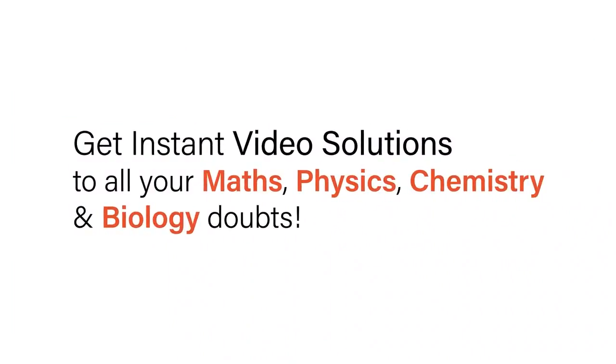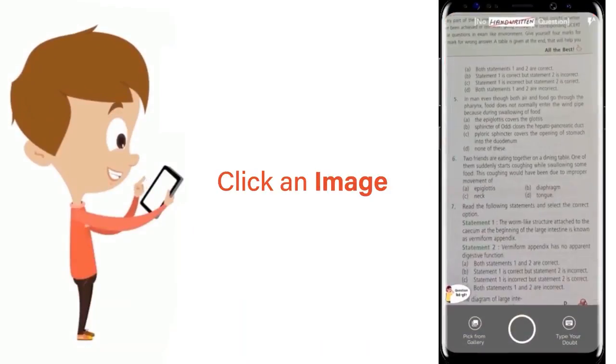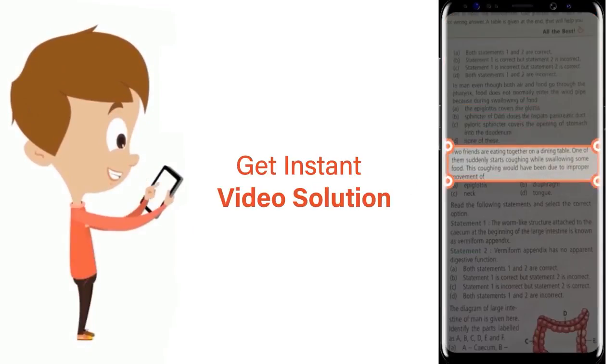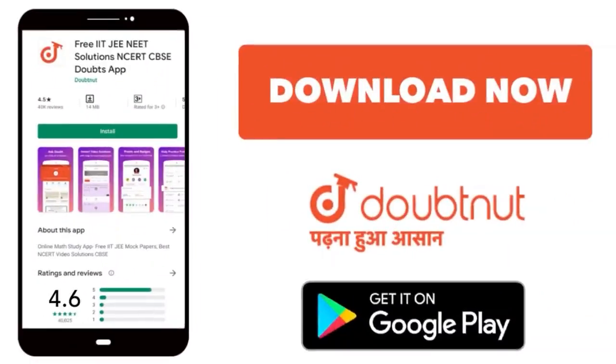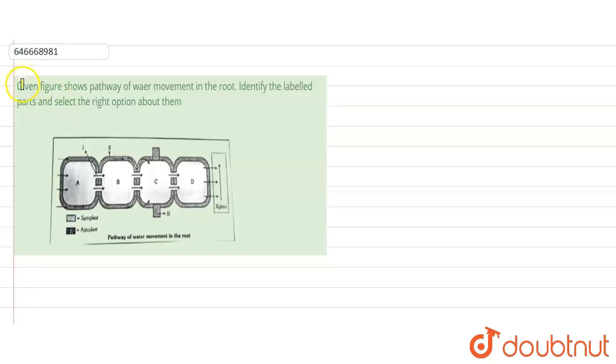With Doubtnut, get instant video solutions to all your math, physics, chemistry and biology doubts. Just click the image of the question, crop the question, and get instant video solution. Download Doubtnut app today. So it's a question that says: the given figure shows pathway of water movement in the root, identify the labeled parts and select the right option about them.